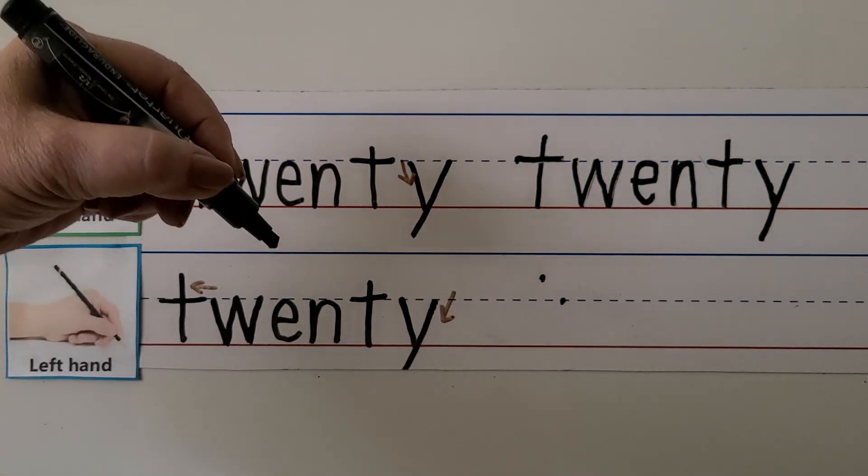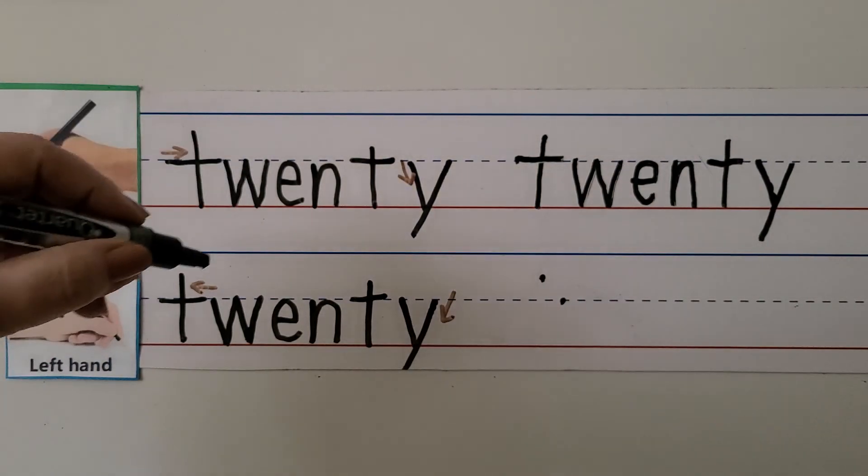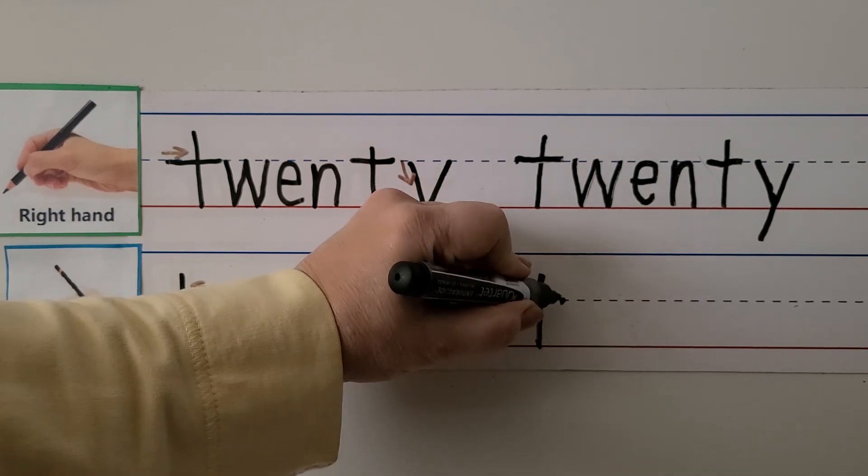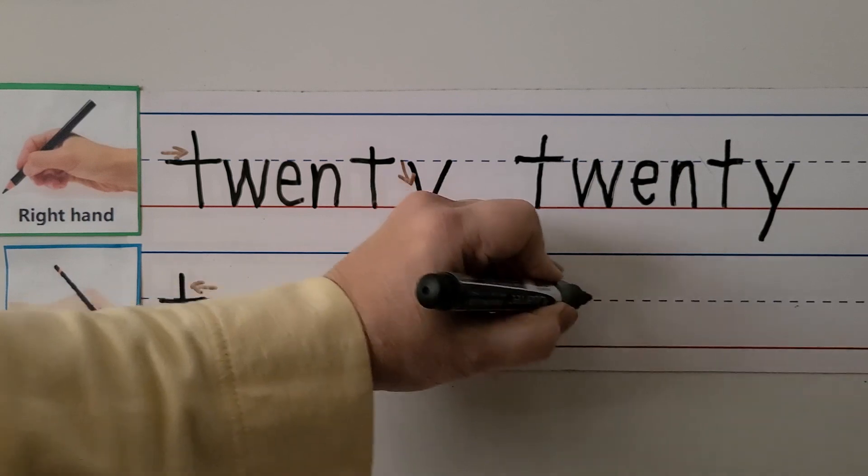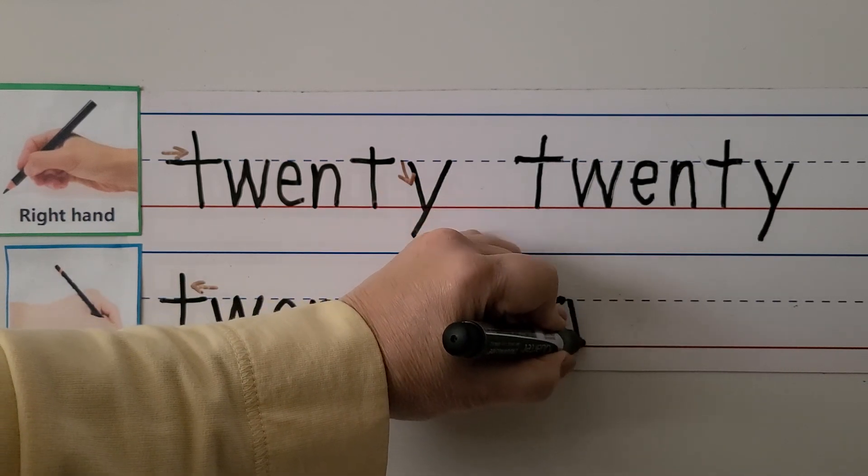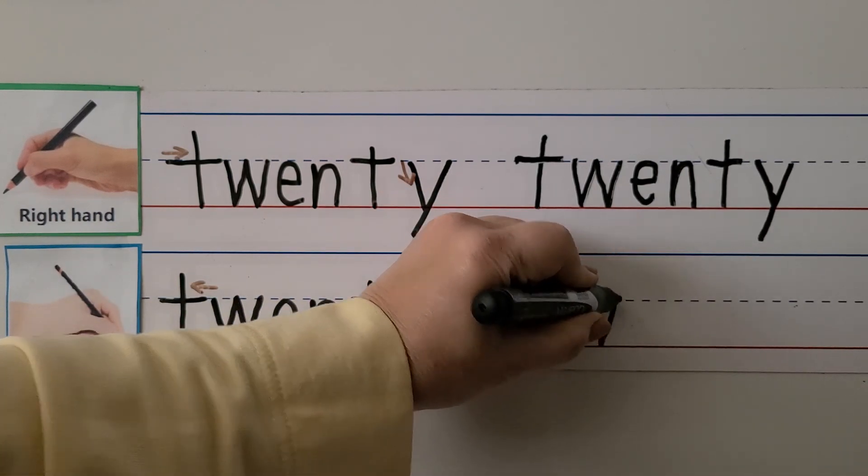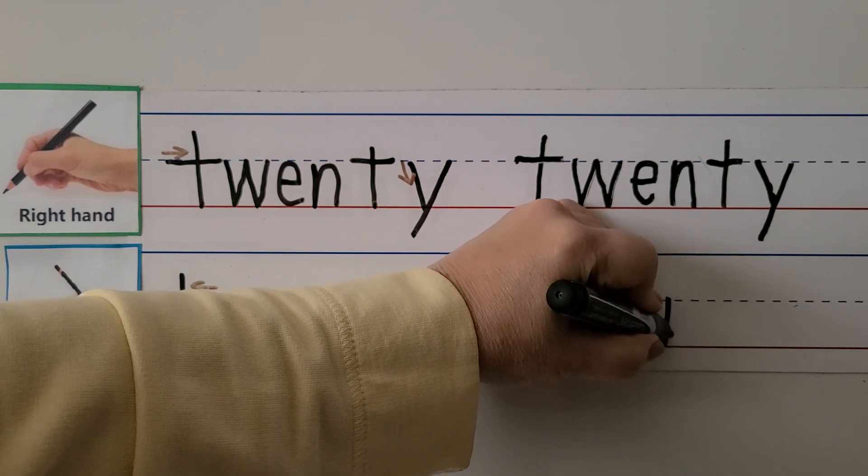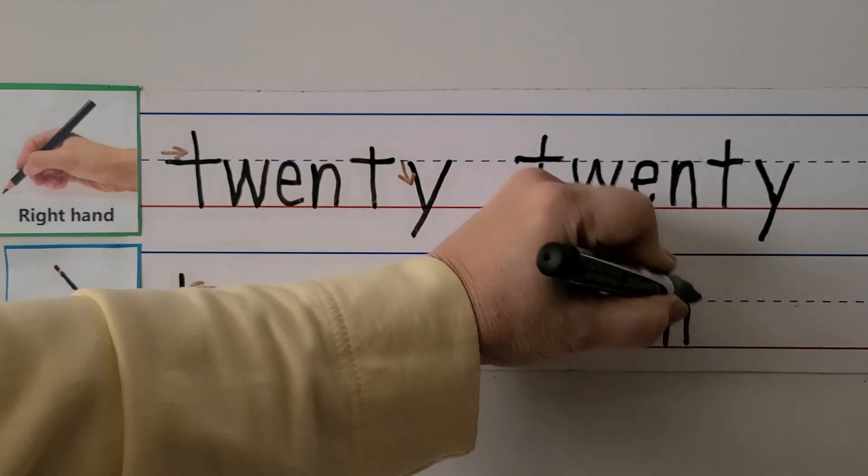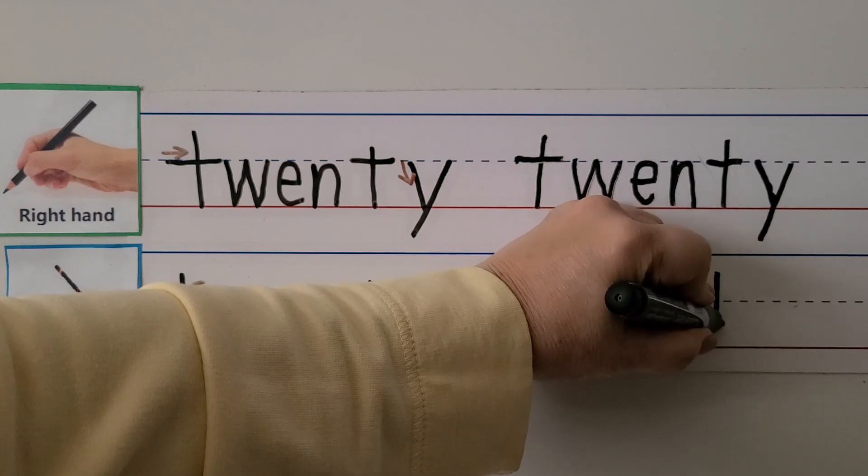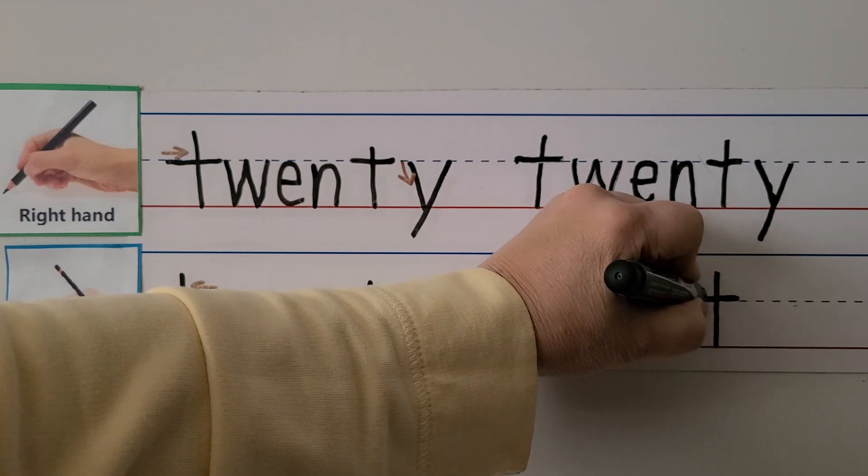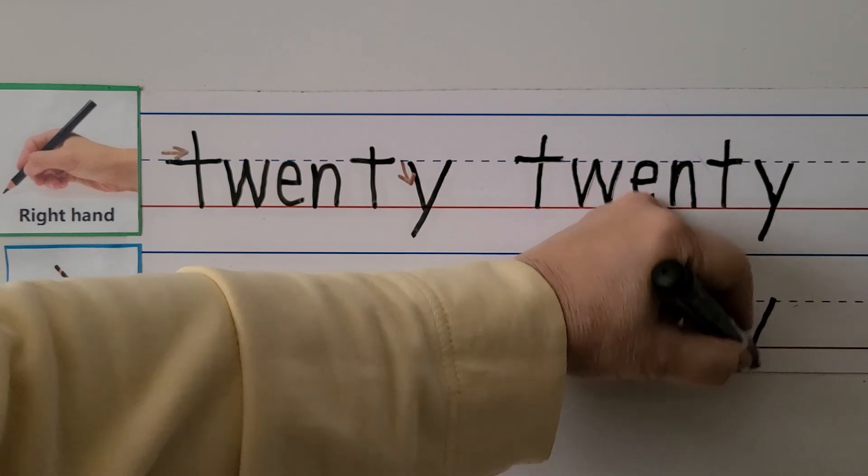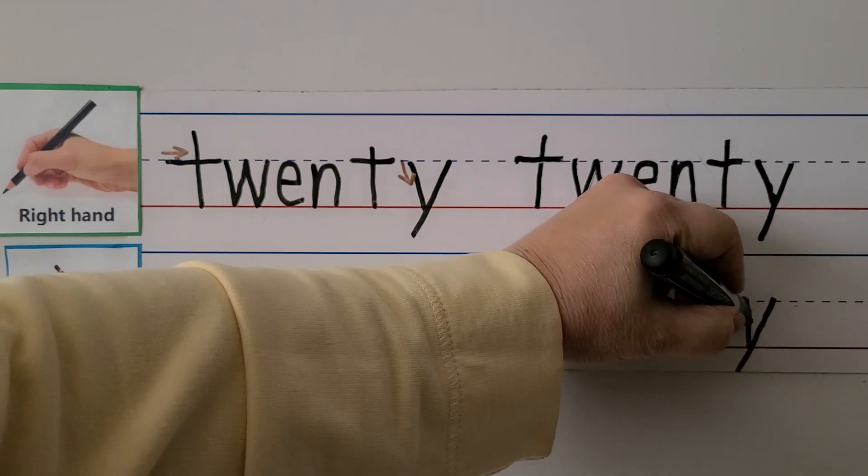We can write twenty with our left hand. Start with the T above the dashed line, come straight down, go on the right side and pull it towards our hand. Make the W. Make an E: push away and come around. Make an N: down and bounce around. T: start above the dashed line, come straight down, go on the right side and pull towards our hand. Make the Y: go down into the basement, then put the small piece right here. Twenty.